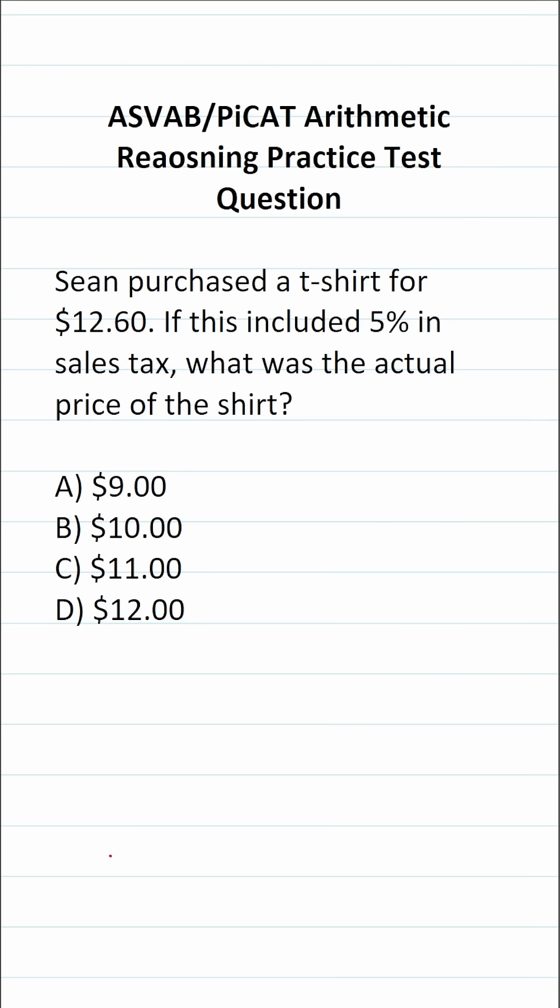So in order to solve this one, we're going to use this formula here. The total price of the shirt, the price that includes the sales tax, is going to be equal to the original price of the shirt plus the original price of the shirt times the tax amount.